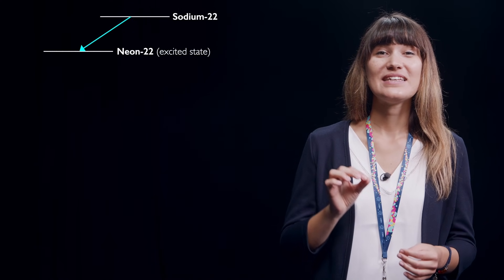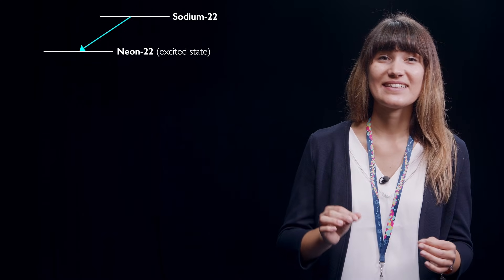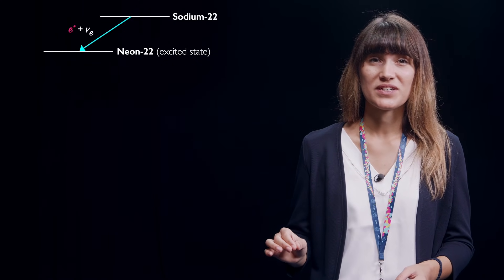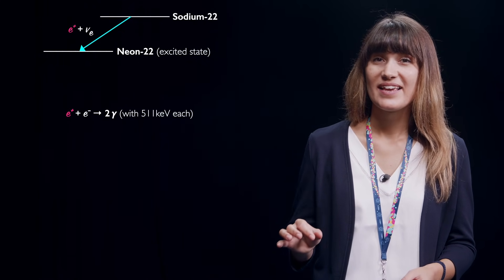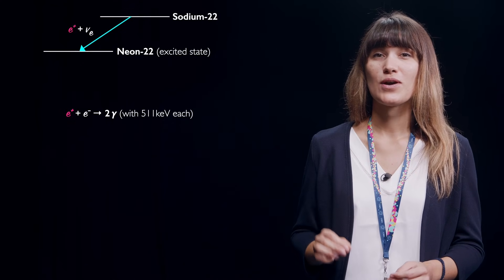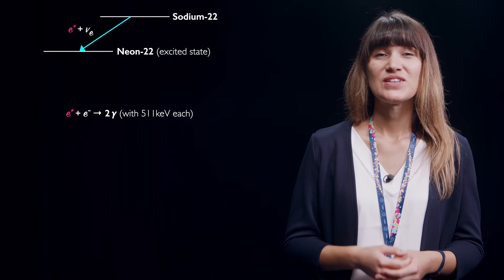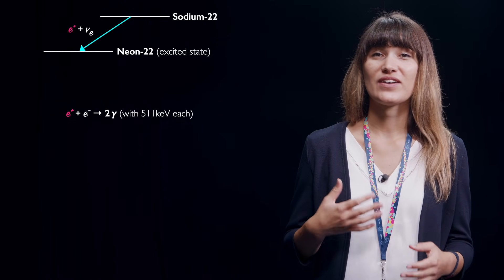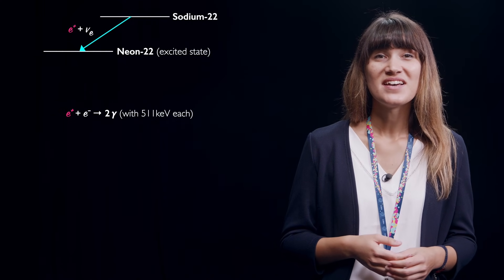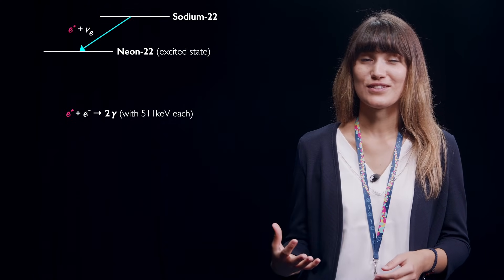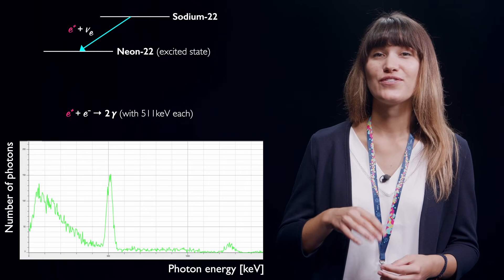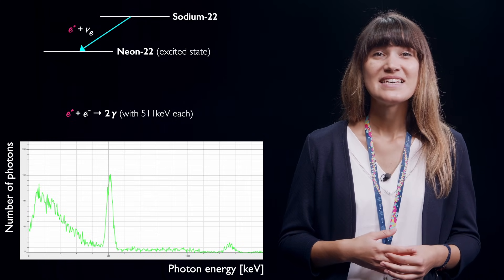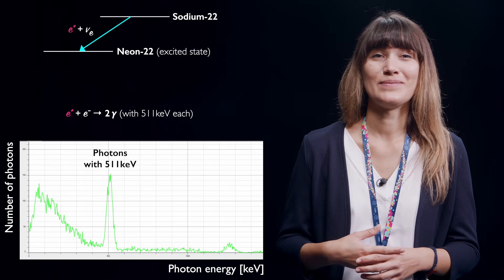The radioactive sodium atoms transform into neon atoms in an excited state while emitting a positron and an electron neutrino. When the positron annihilates with an electron, they can transform into two photons, each with an energy of 511 keV. The scintillation detector detects these photons. Thus, we can observe a high number of photons with an energy of around 511 keV — this is the big peak in the middle of the output diagram.